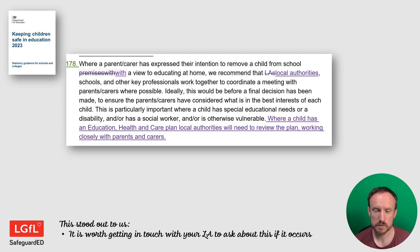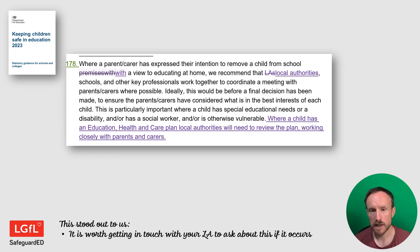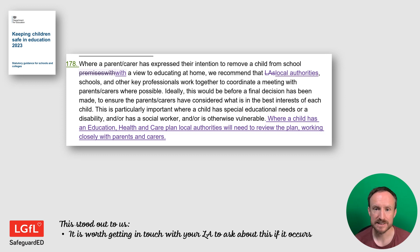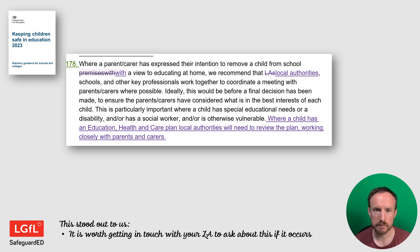In this paragraph about children being educated from home and removed from roll, there's an extra note about where a child has an EHCP — that local authorities need to review this plan as the child goes off roll. It's worth getting in touch with your local authority to see what form this will take. Just being aware of this is helpful because it's something the LA needs to do, and knowing what others need to do can often be really useful.